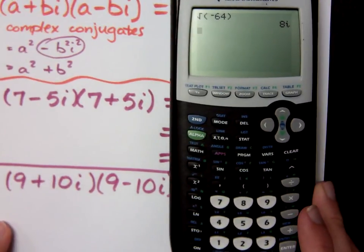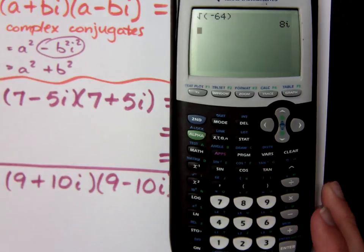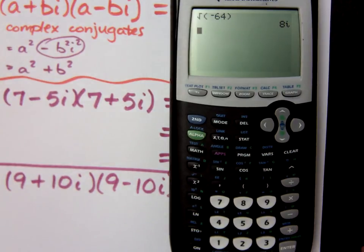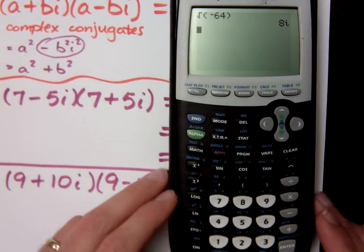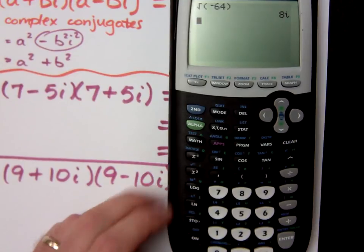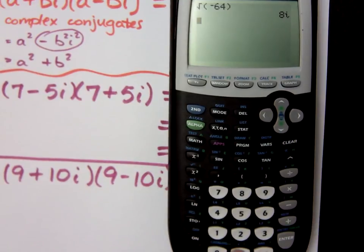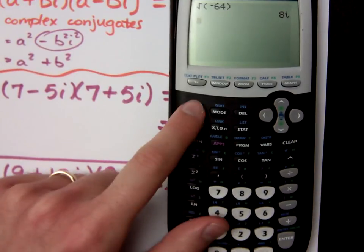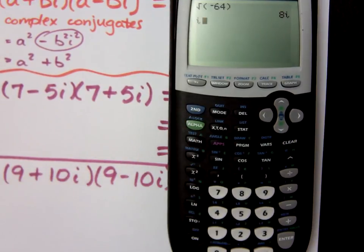You can type in these other expressions as well, but you have to know how to type in the i. Look right here above the decimal — it's kind of hard to see, but if you do second decimal, it brings up the i.